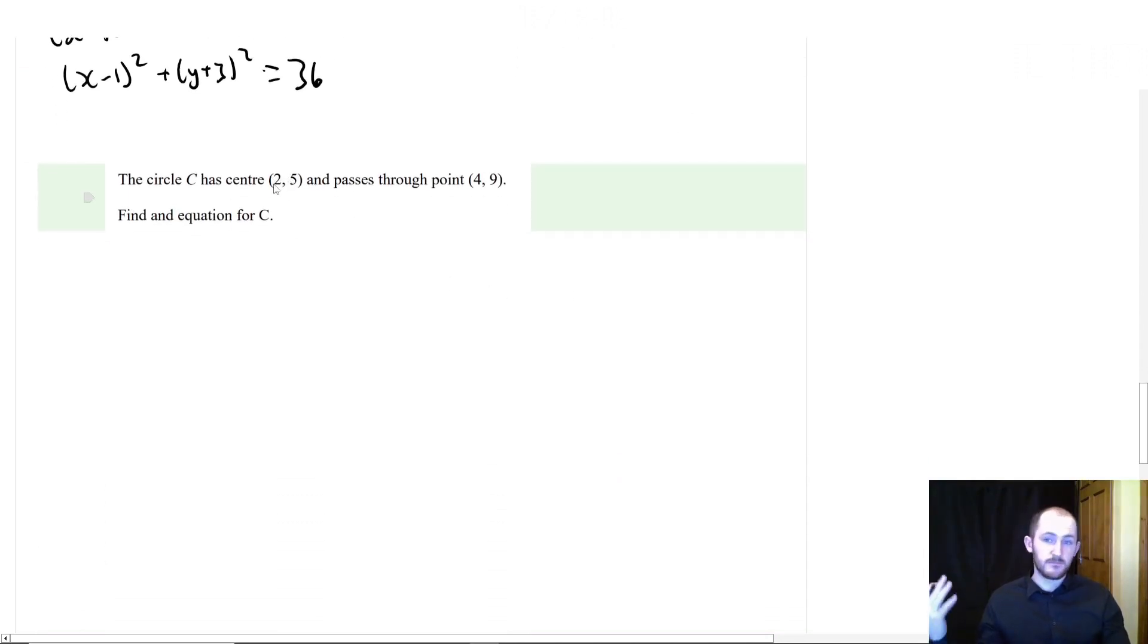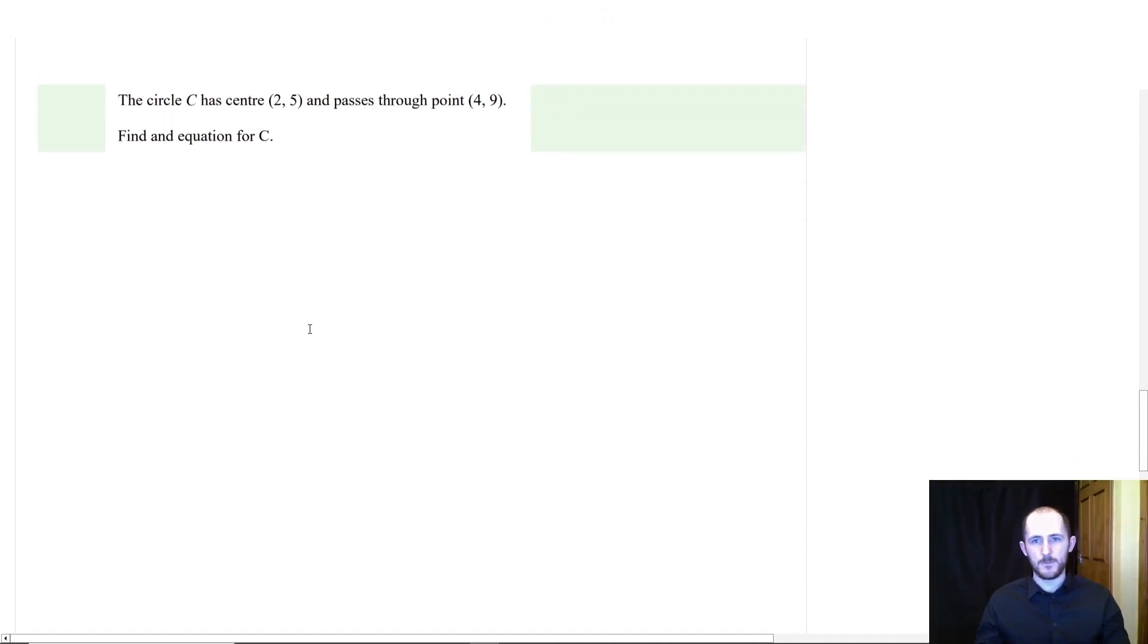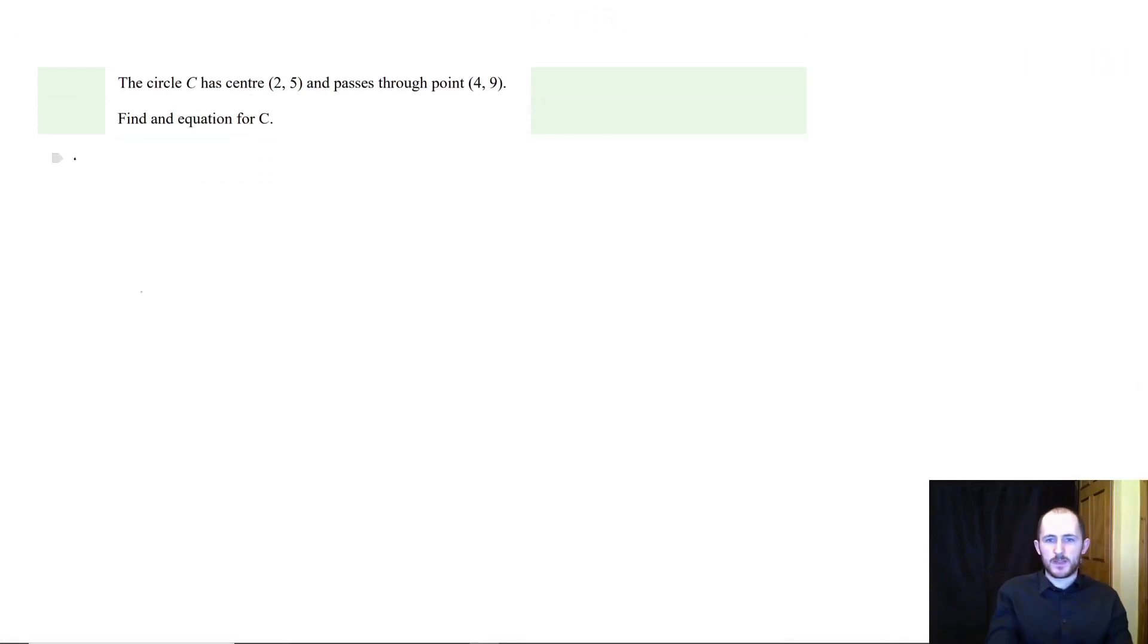Don't just jump straight to this. And generally speaking, the number of marks won't be too many. So don't let that fool you. And here is another one. So the center of circle C has center this and passes through the point. So how do we do this? Well, we know what the center is, so let's actually add that in.